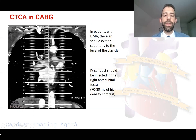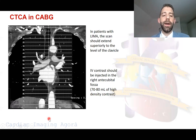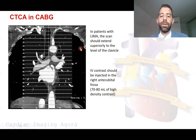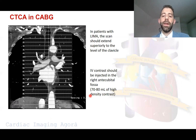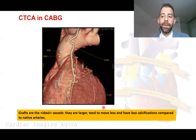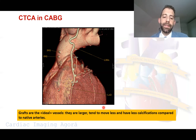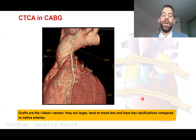Moving to the revascularized patient — the patient with bypass grafts is not so difficult to evaluate. The key point is that we have to extend the field of view superiorly to the level of the clavicle if there are grafts. It's also important to give the right amount of contrast agent — not 50 to 60 mL as we usually use for native coronary arteries, but from 70 to 80 milliliters. The grafts are actually ideal vessels because they are larger, move less, and have fewer calcifications compared to native arteries.